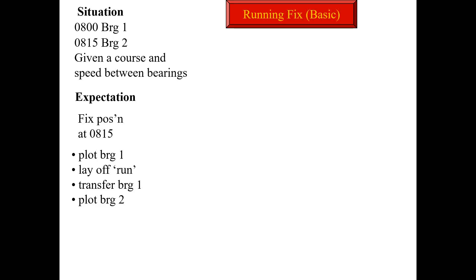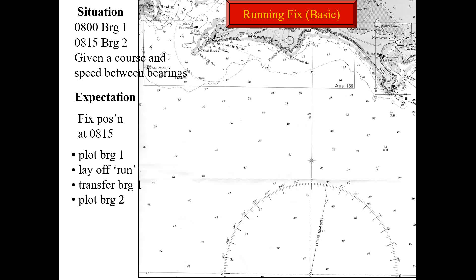Now let's talk about running fix. Running fix is basically the transfer of position lines. In this basic example with no set or current, at 0800 you obtain a bearing line from a fixed object, such as a lighthouse. But you don't know the range of the lighthouse or cannot obtain it, so you only get a bearing. From a single position line you cannot get the vessel's position.